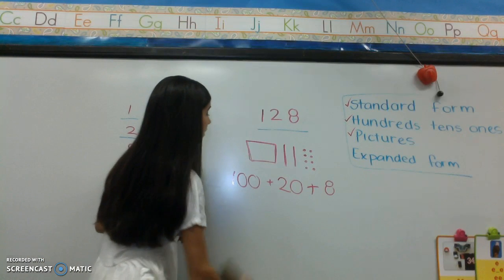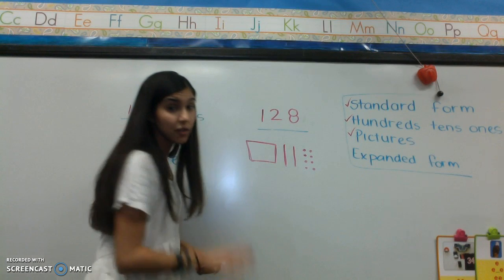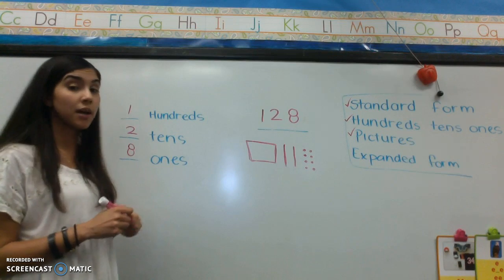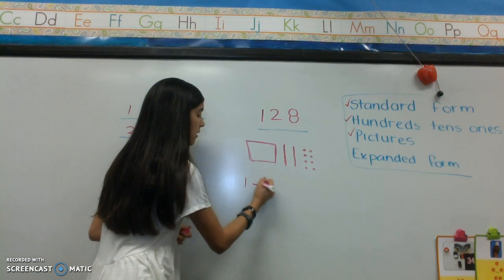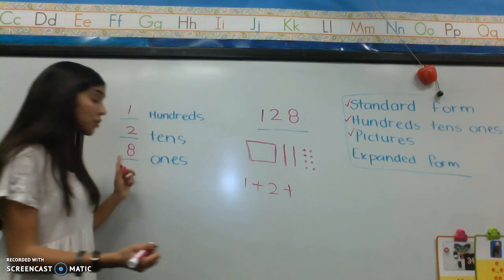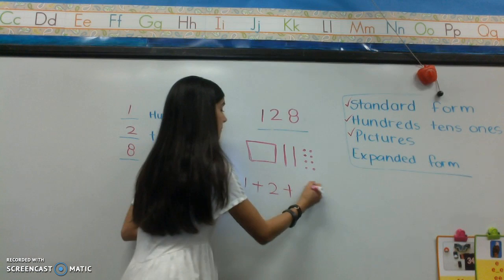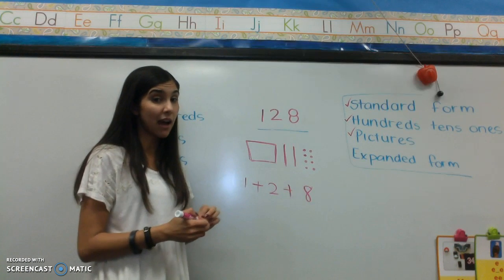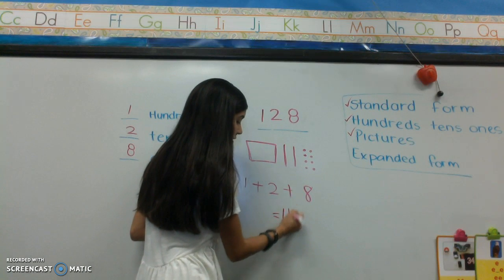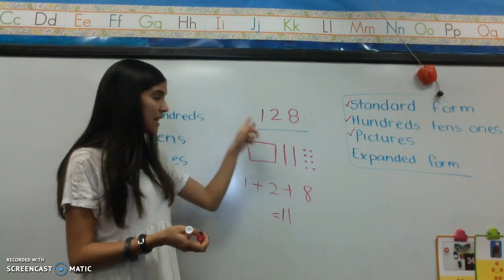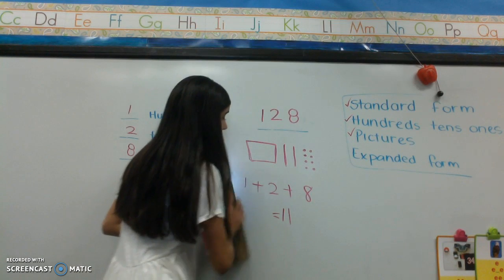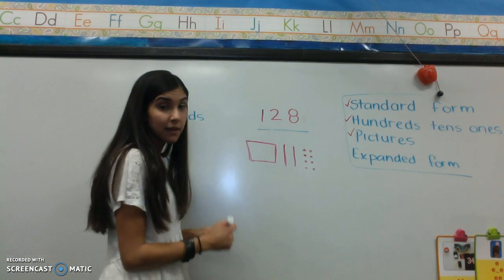Now I'm going to show you what a lot of second graders do, and this is wrong — so watch carefully. This is the wrong way to do it. A lot of second graders just write the digit: one in my hundreds place, two in my tens place, plus eight in my ones place. Now let's count: one plus two plus eight is 11. This equals 11. Is 11 the same thing as 128? No, those are not the same thing. This is the wrong way to do expanded form.